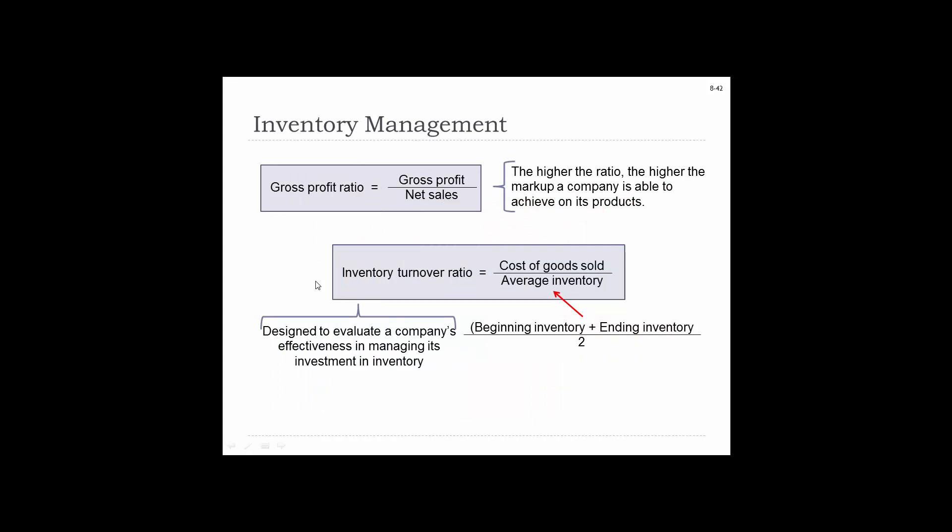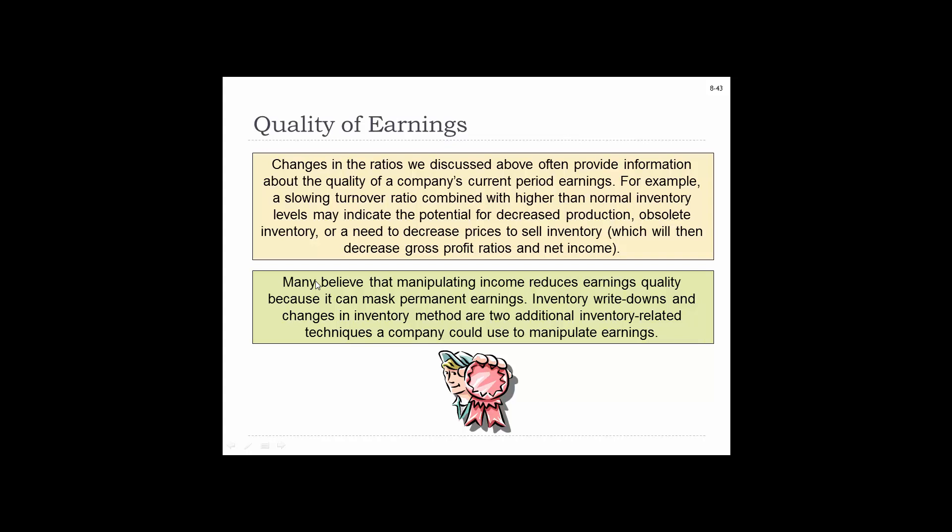Inventory management. The gross profit ratio is gross profit divided by net sales — the higher the ratio, the higher the markup a company is able to achieve. The inventory turnover ratio is designed to evaluate the company's effectiveness in managing its inventory: beginning inventory plus ending inventory divided by 2 gives average inventory, and then cost of goods sold divided by average inventory gives the turnover ratio. Changes in these ratios provide information about earnings quality. A slow turnover ratio combined with higher-than-normal inventory levels indicates potential decreased production, obsolete inventory, or a need to decrease prices, resulting in lower gross profit and net income. Inventory write-downs and changes in inventory methods are additional techniques a company can use to manipulate earnings.